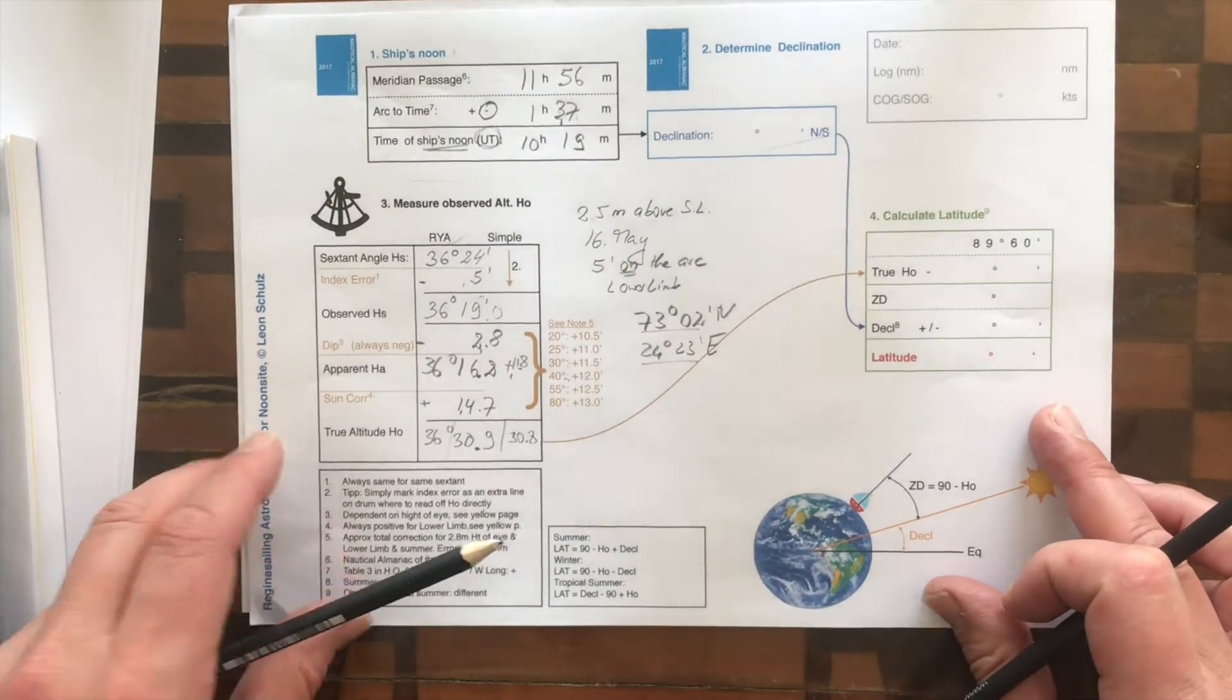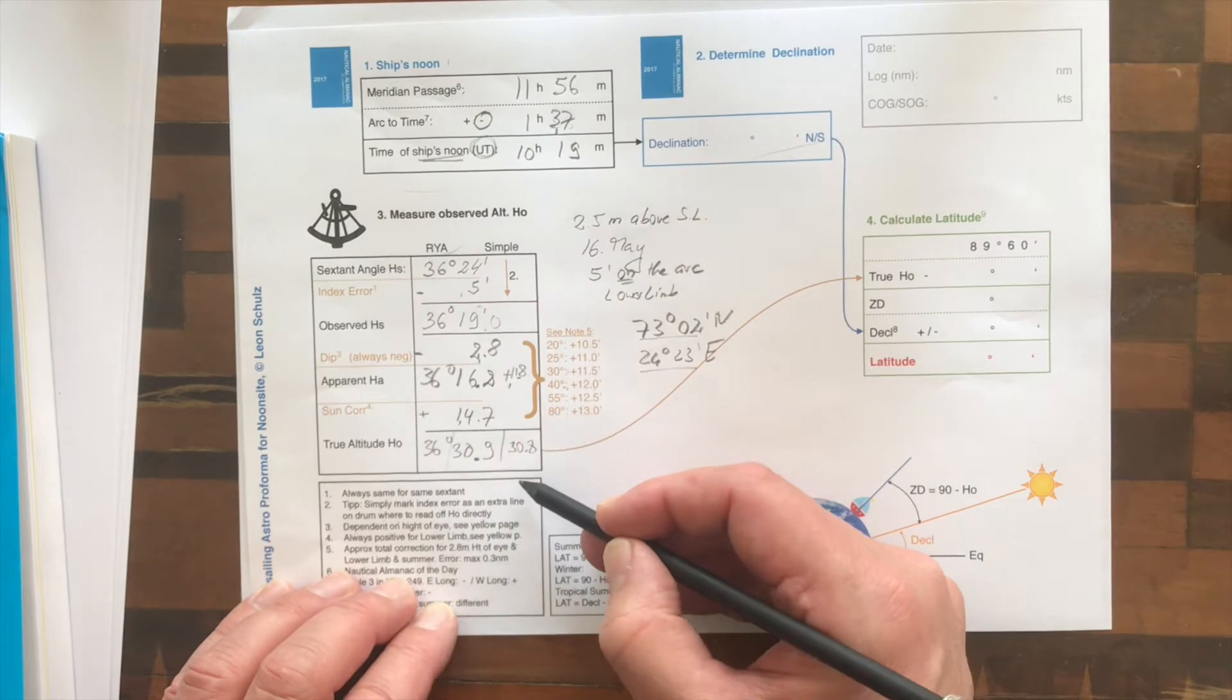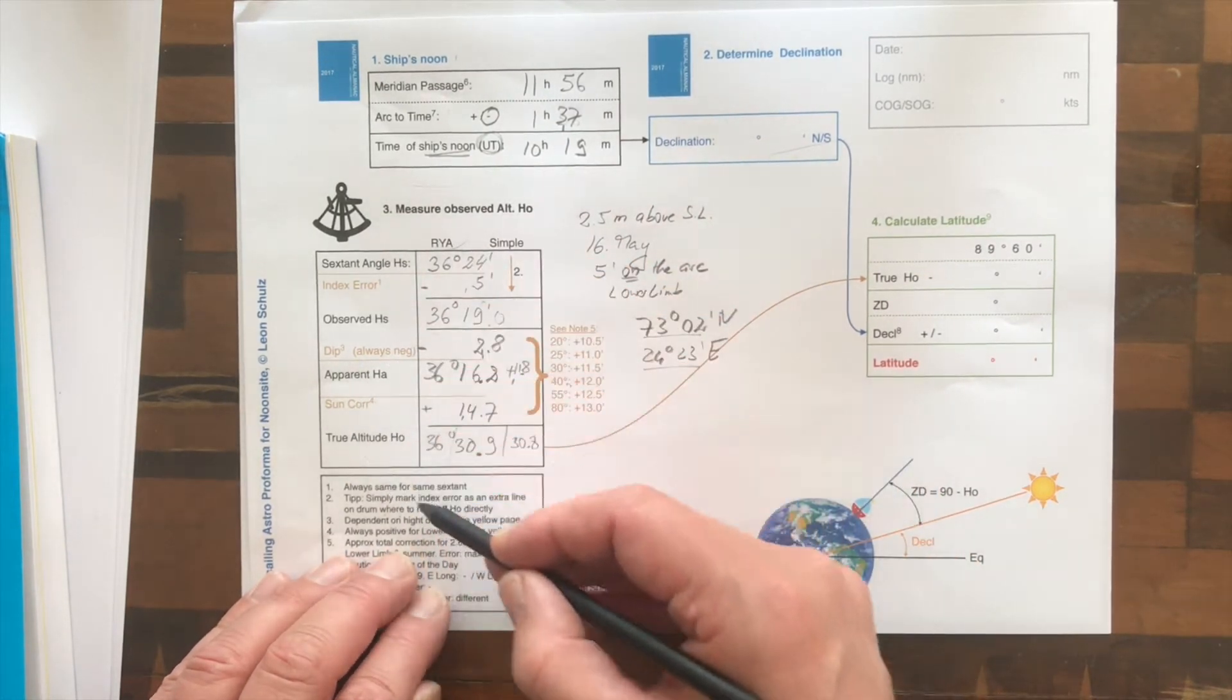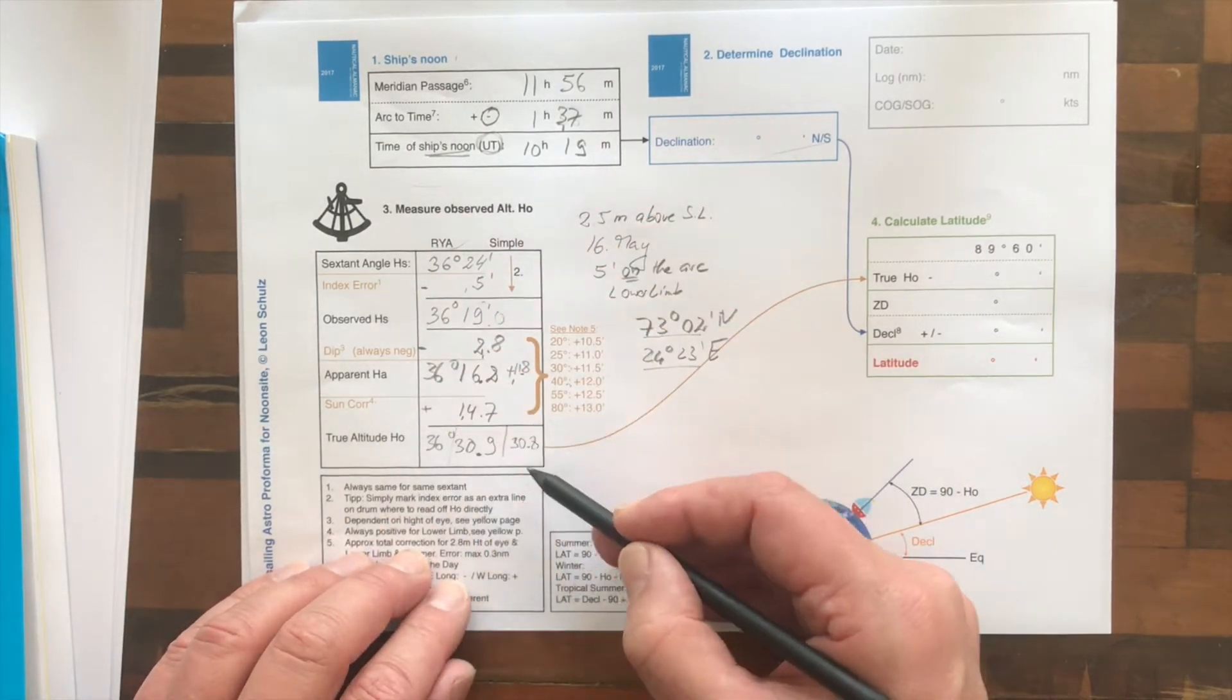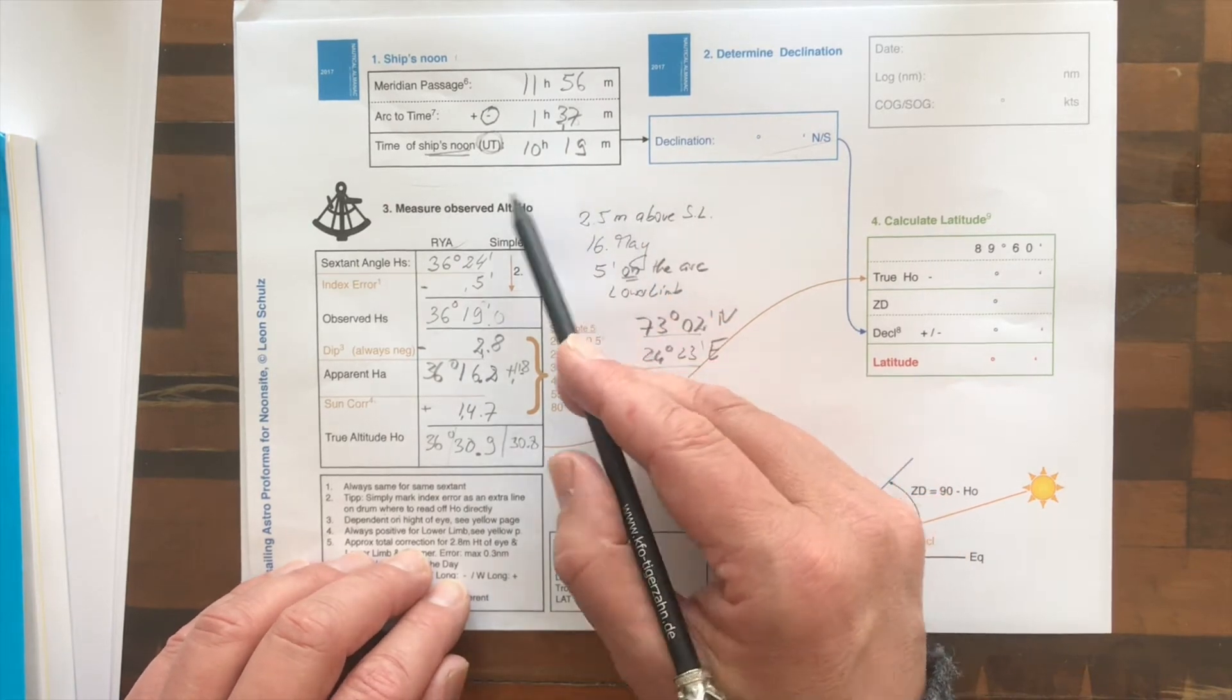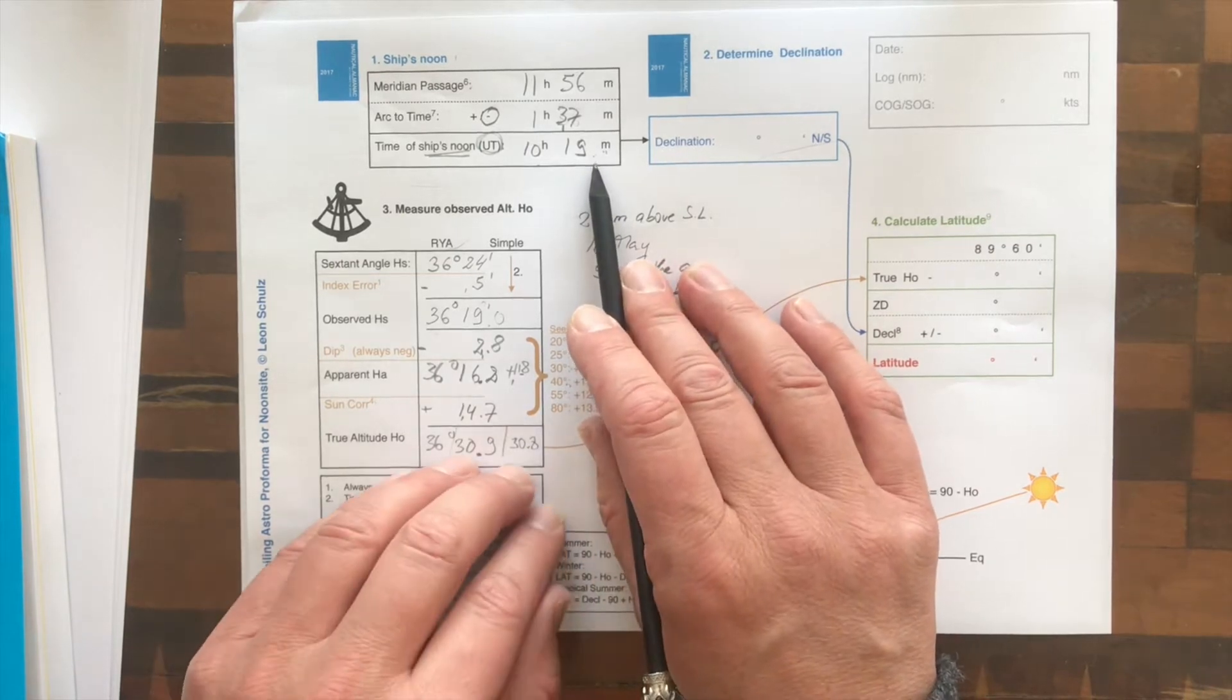Remember this piece of paper? We have seen what altitude we actually shot the sun, and I only gave one example for this because we're going to do it all over again. Then we checked out when is Meridian Passage at ship's noon. So at 10:19, that's when we have noon.